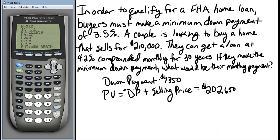At the end of 30 years the loan will be paid off, so the future value is zero. Our payments and compounding periods are both monthly. We weren't given any information otherwise, so we assume it is an ordinary annuity where payments are made at the end. We'll go back up and press Alpha Enter next to payment.